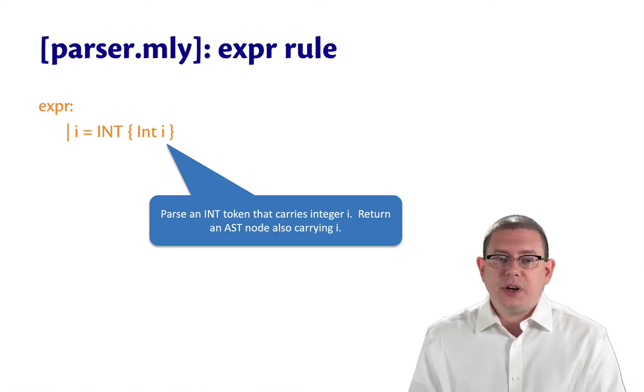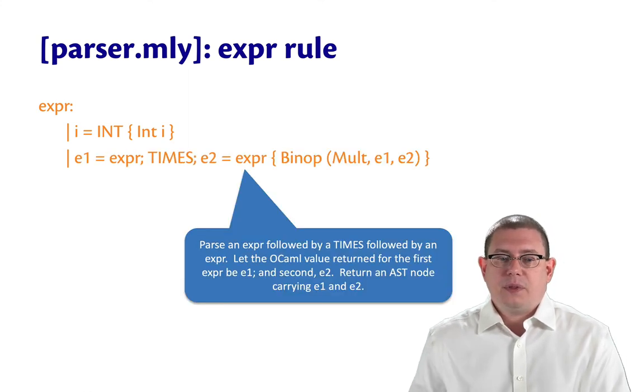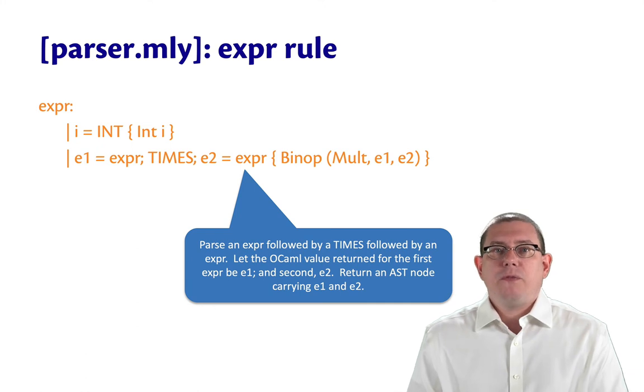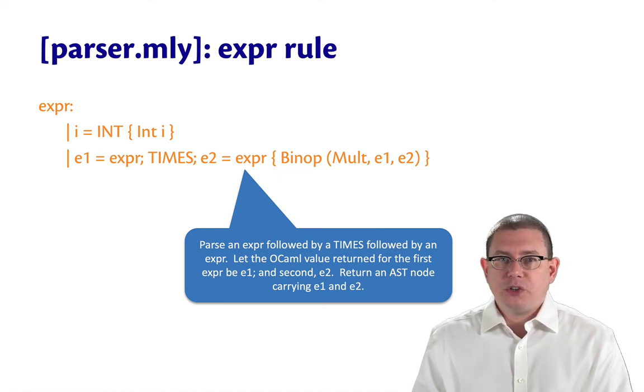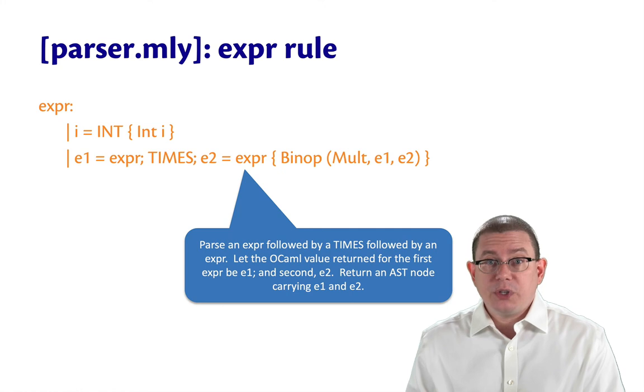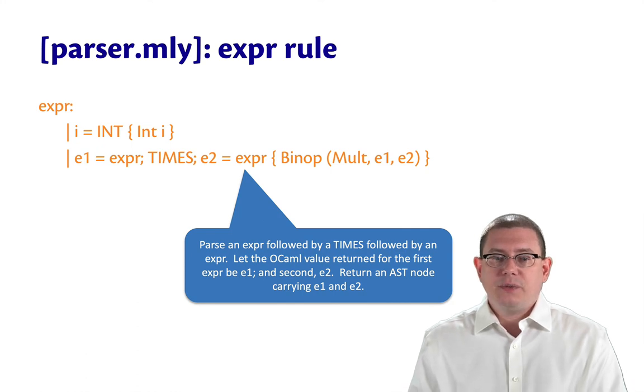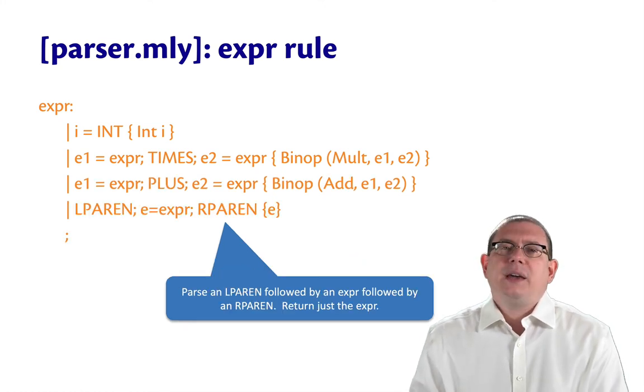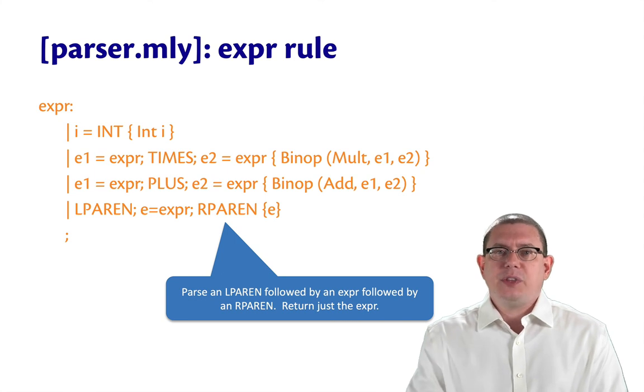The first part of the production here was for integers that parsed an int, all capitals, token that carried an integer i. We returned an AST node also carrying that integer i. The next production had an expression, times, and another expression that parsed an expression, followed by a times token, followed by another expression. And we bound the result of parsing the first expression to an OCaml variable e1. We bound the result of parsing the second expression to an OCaml variable e2. And then we constructed an AST node to return as the action. And that AST node was a binop node with mult e1 and e2 in it. Same for plus. And then for parentheses, we kind of discarded the parentheses. We no longer needed the concrete syntax. We're just representing abstract syntax now and returned the expression e.